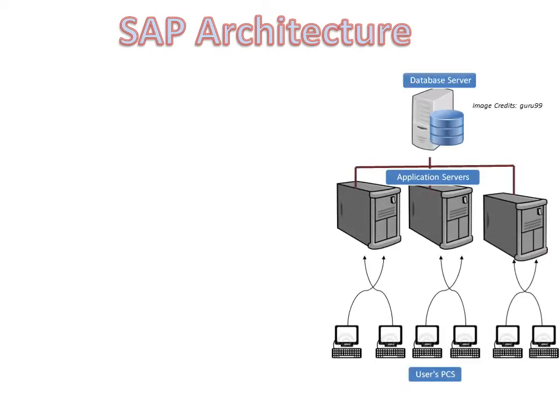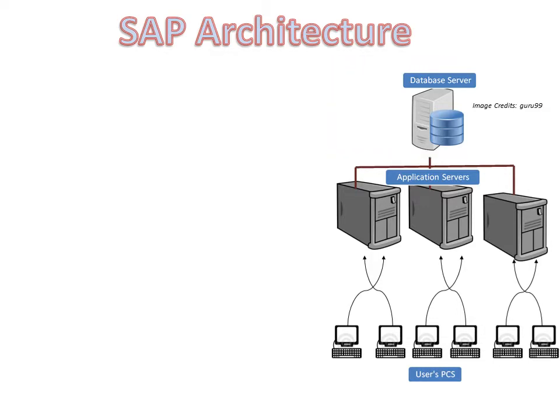Let's try to understand the SAP architecture a little bit. The system is called the R3 system, a three-tier system divided into three layers: database, application, and presentation. The database layer stores all the tables and schema inside SAP, from where the data is fetched and displayed onto the presentation layer via different transaction codes.